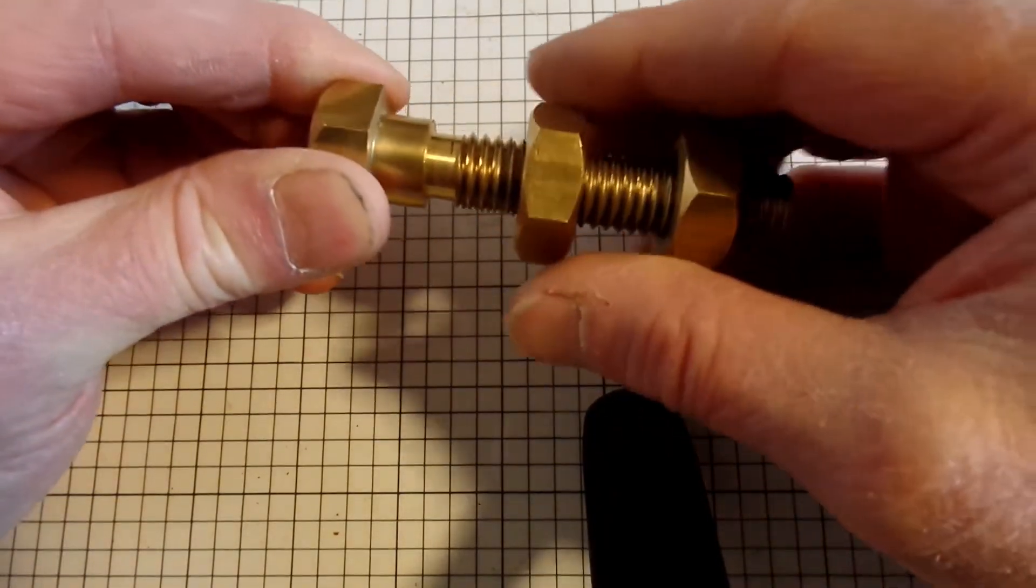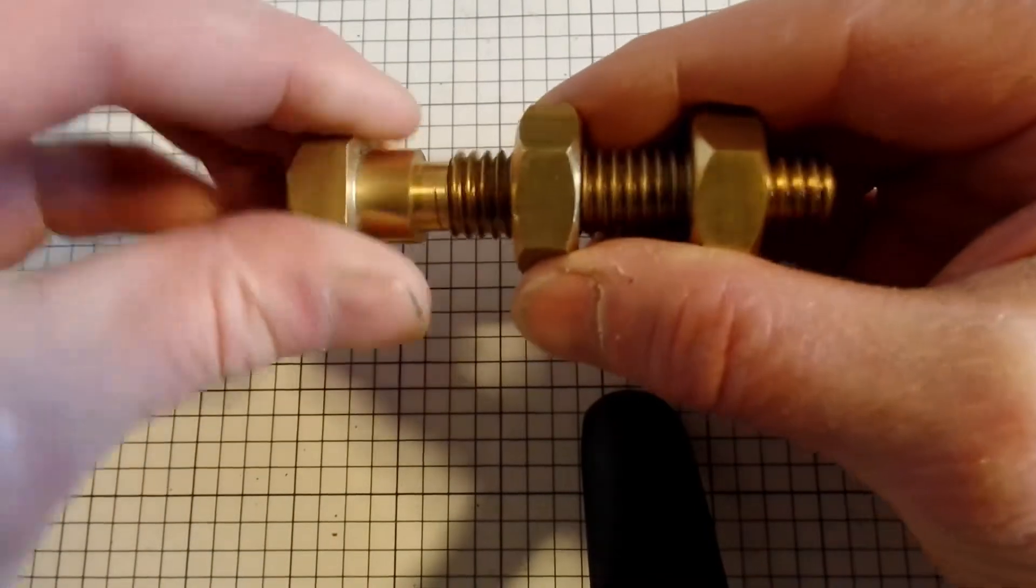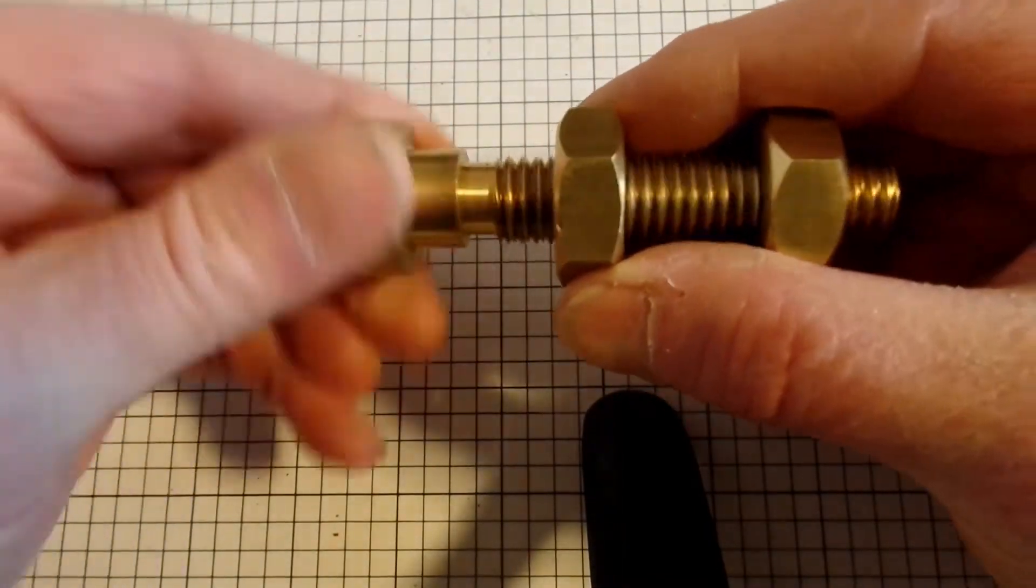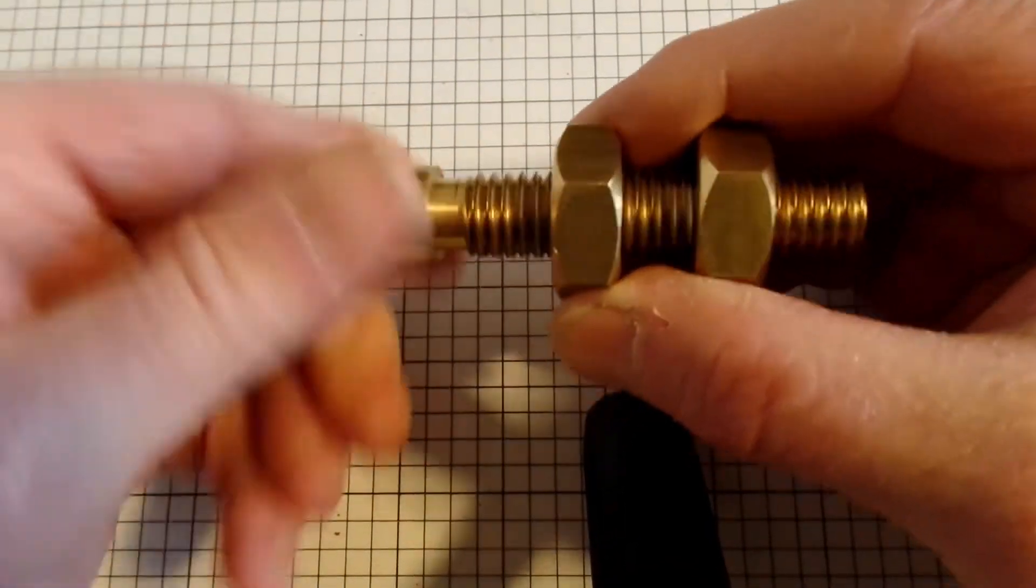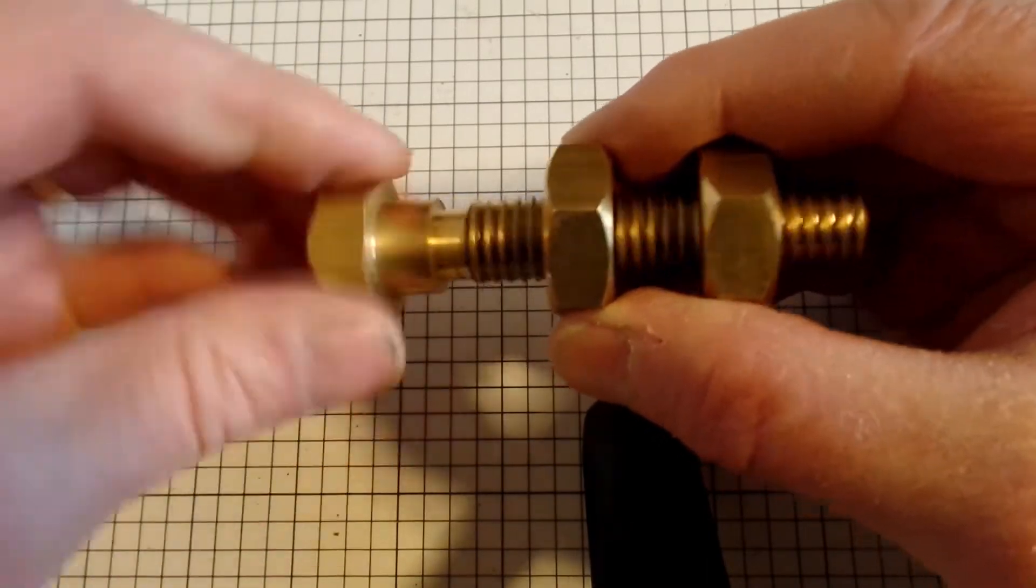They both go on. If you hold the nuts and turn the bolt, they either go apart or together because one's going right and one's going left.